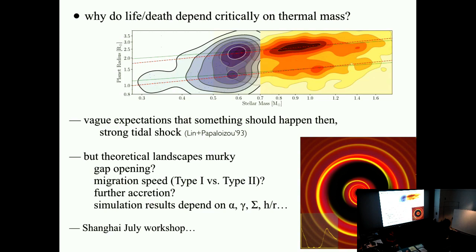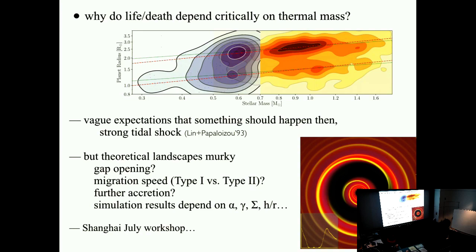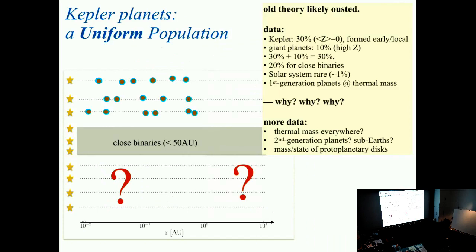Why do planets have to be the thermal mass? At this point I totally give up — I have no idea. In July we're hoping to have a workshop to discuss why, when we make planets in the protoplanetary disk — the Kepler planets, not the terrestrial ones made presumably in the gas-free phase — why in those environments when you make any kind of planet it better have one single mass: the thermal mass. The data is now telling us which direction to go. On my last slide, I put three question marks because we don't know what our results mean. But the hope is that now we know which direction to go. Thank you for your attention.